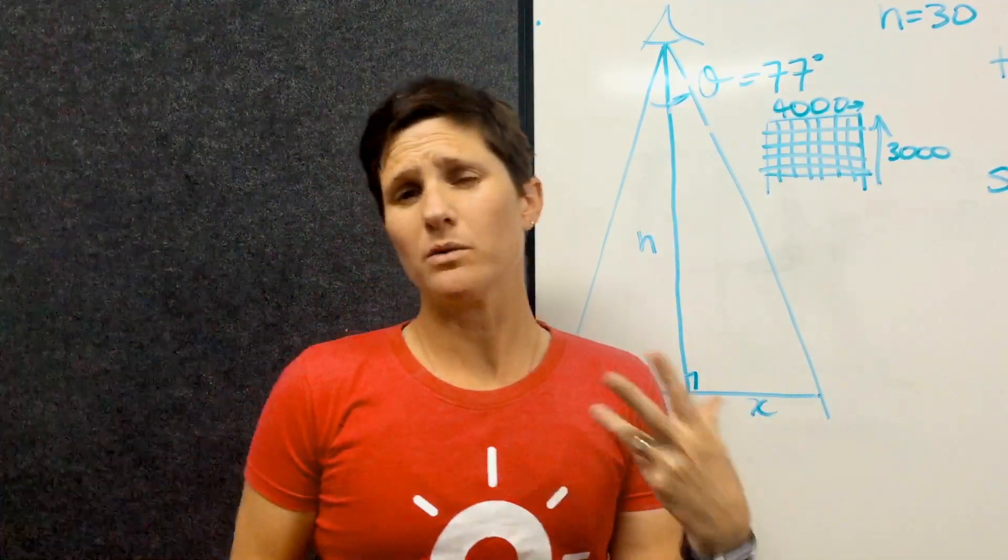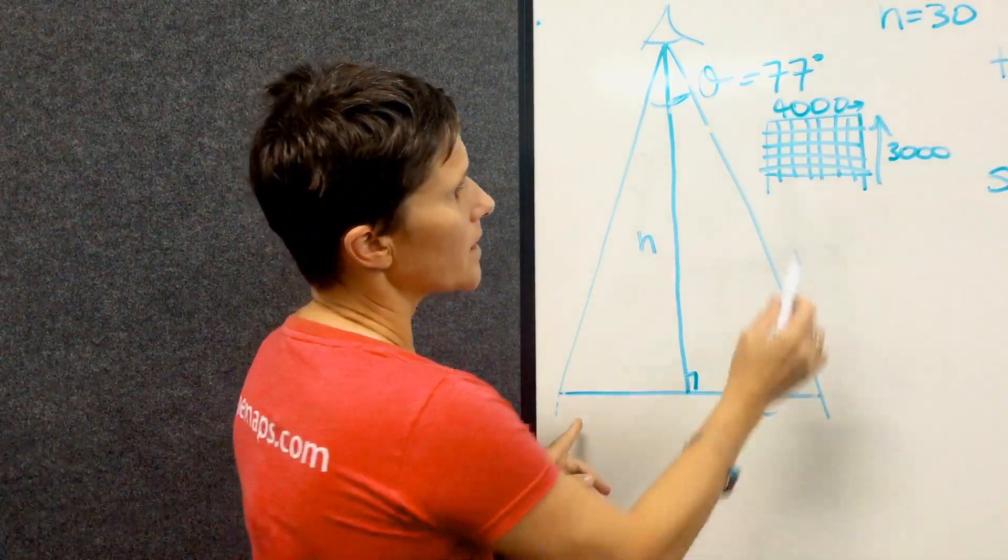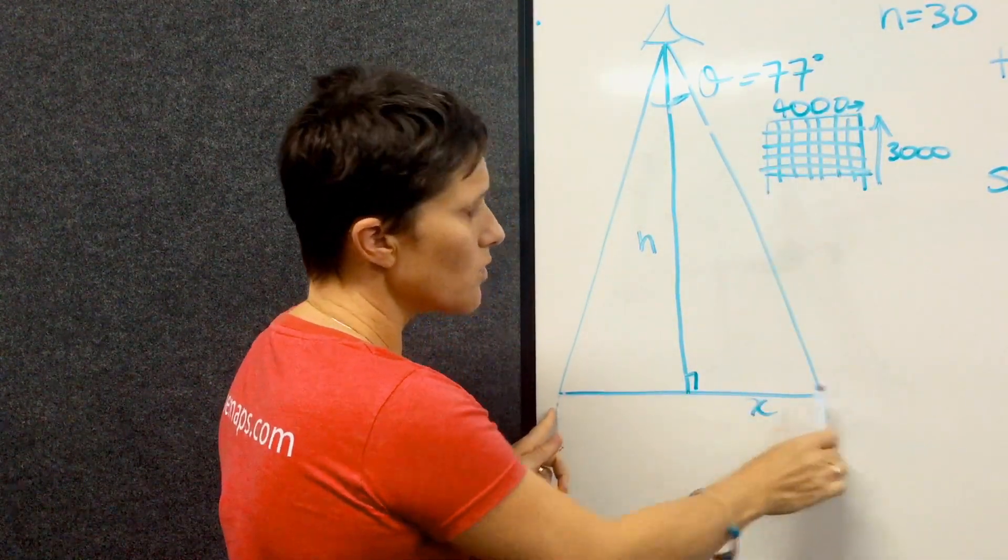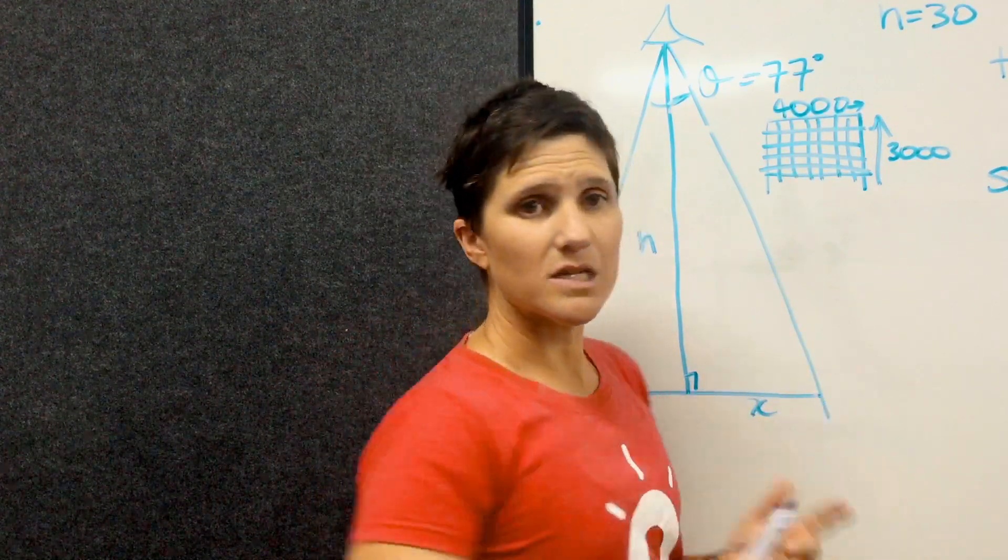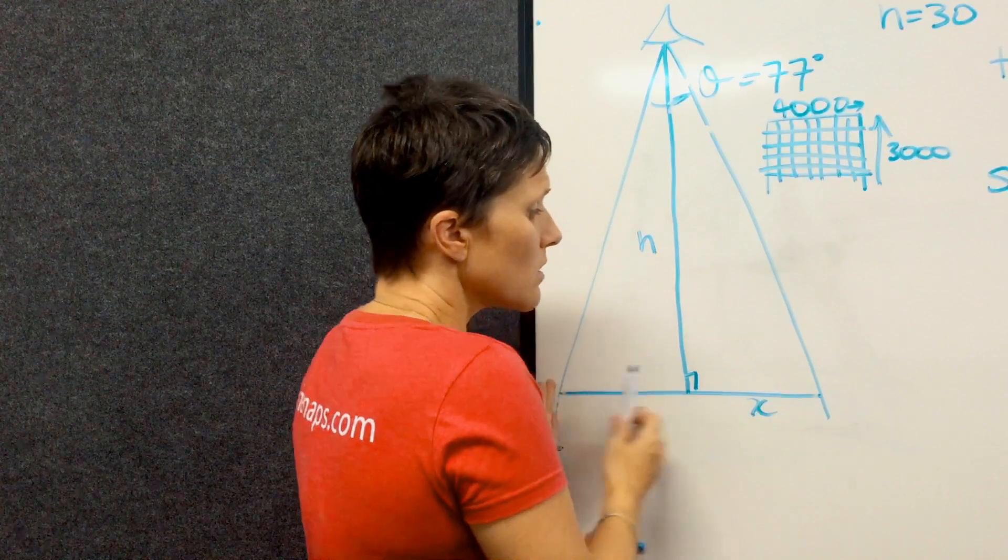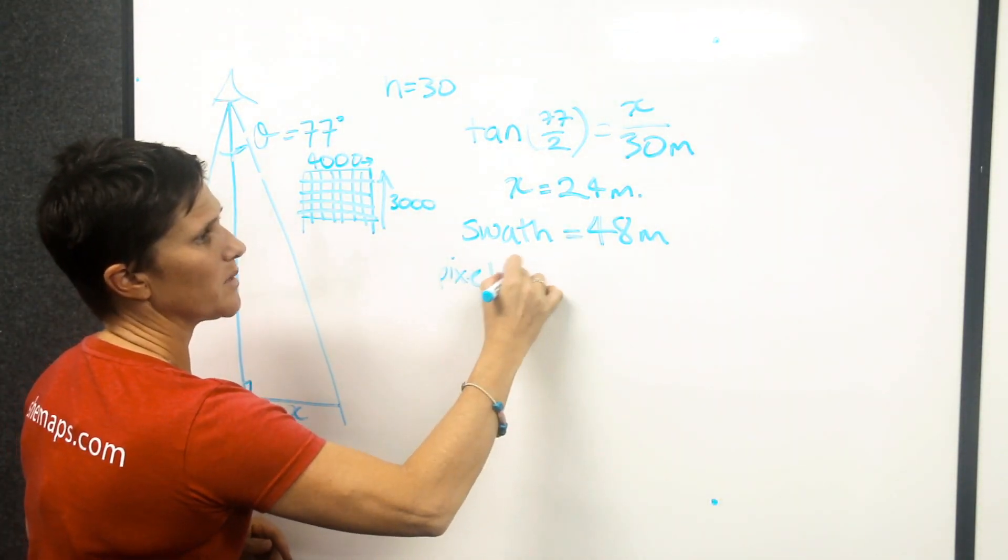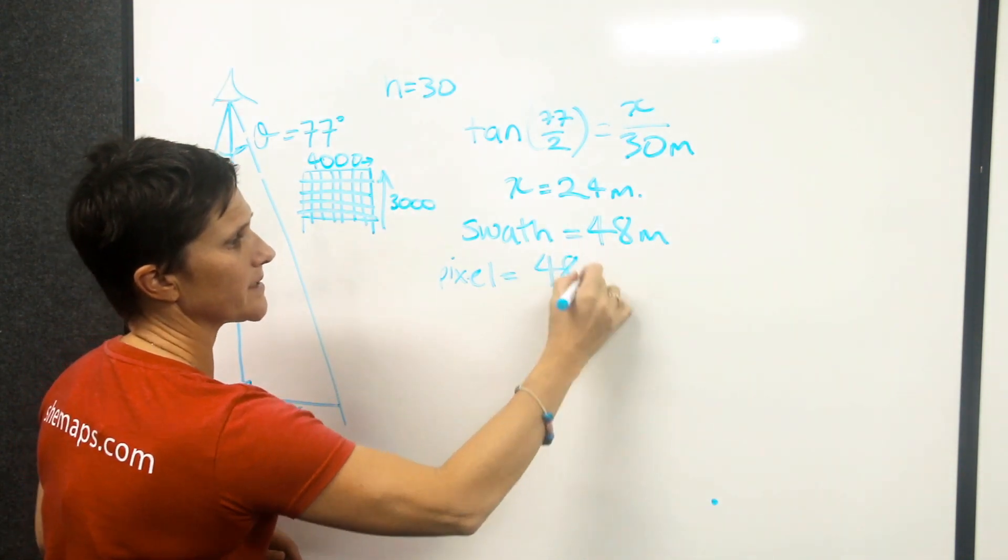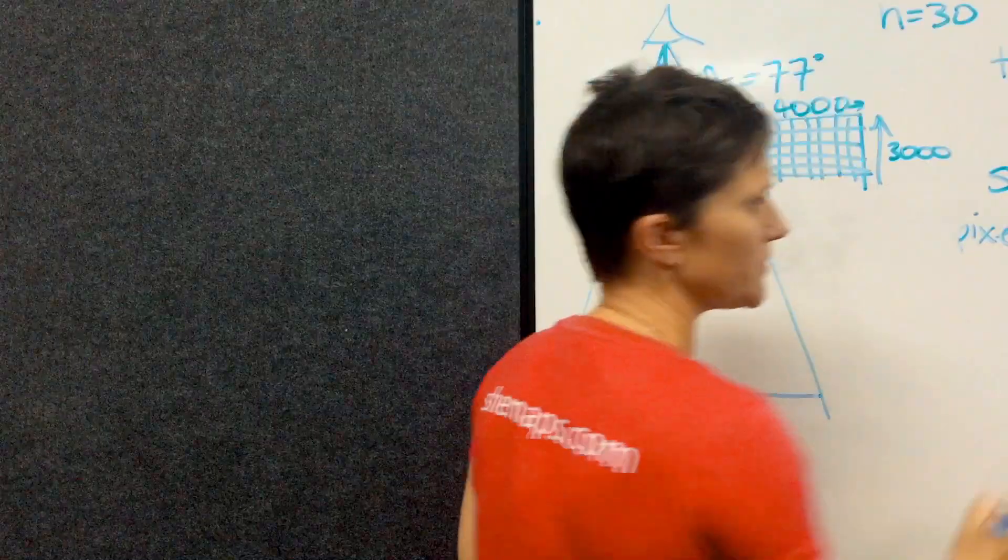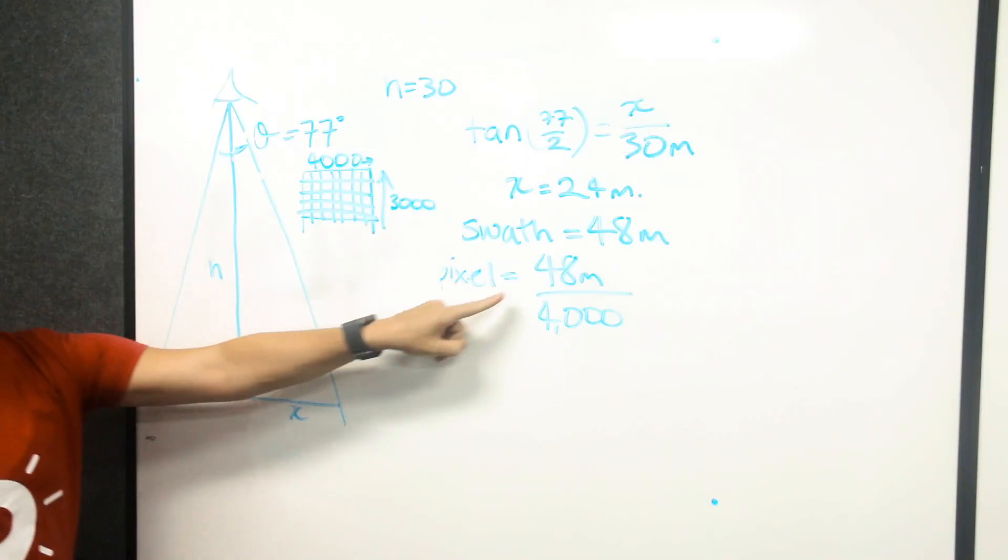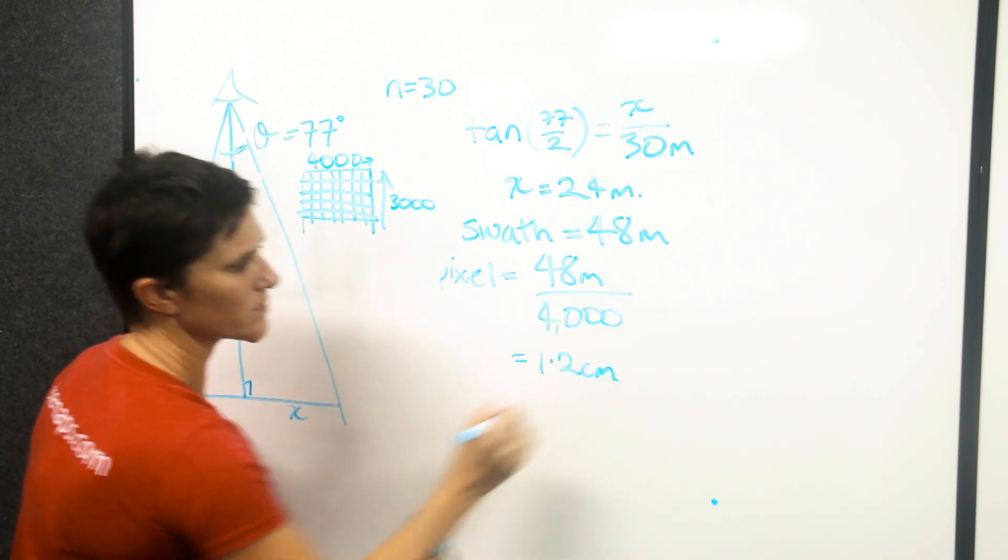Now if I go back to my original question, what is that pixel size? Well, I know that I've got 4,000 pixels all the way across here and I know that all the way across here is 48 meters, so one individual pixel then is going to be 48 meters divided by 4,000. So then if we calculate this out, we get our pixel size to be about 1.2 centimeters.